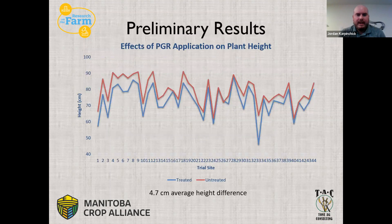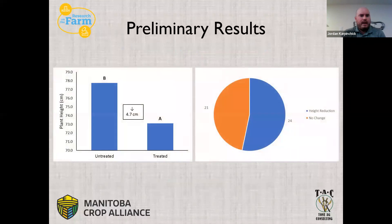For plant height across all trials — about 44 to 45 sites — we're seeing 73 centimeters on average for treated strips and 78 centimeters for untreated, so about a 4.7 centimeter height difference on average. Overall across those sites, we are seeing a significant height reduction from use of PGRs about 53% of the time. When you look across all trials, there is still a consistent overall difference when comparing treated and untreated.